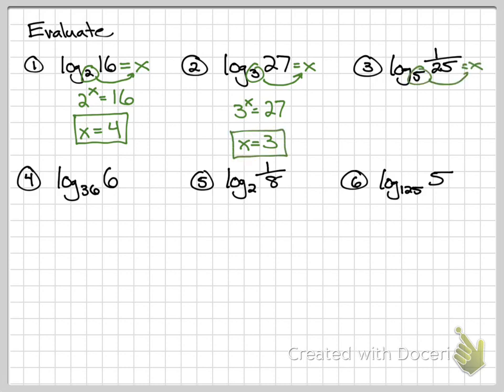Number 3, 5 to what power equals 1 over 25? Now to get a fraction using an exponent, your exponent needs to be negative. And then in order to get 25, 5 squared is 25, so the answer is negative 2. Negative exponents give you fractions.